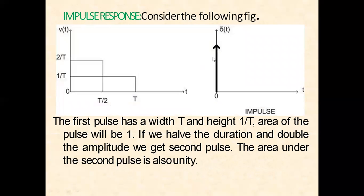Impulse function. Consider the following pulse: the first pulse has a width of T from zero to T, and a height of 1/T. The area of this pulse is T times 1/T, which equals one. If we have half the duration and double the amplitude, the time duration becomes T/2 and the amplitude becomes 2/T.